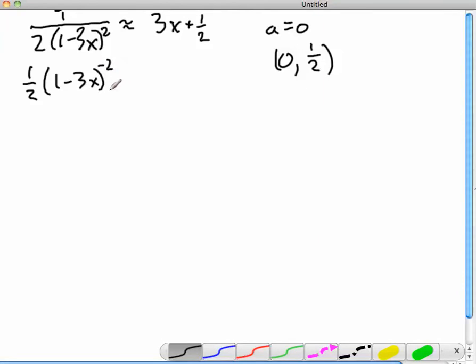When I take the derivative of this, I bring that minus 2 out front, so I'll get 1 half times the minus 2 that I've brought out front, and then it's (1 minus 3x) to the minus 3, because I'll take away 1 from the minus 2.